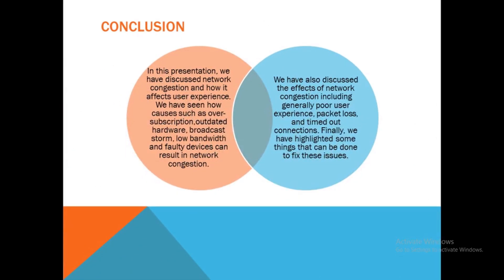So let's go over the takeaways. In this presentation, we have discussed network congestion and how it affects user experience. We have seen how causes such as oversubscription, outdated hardware, low bandwidth, and faulty devices can result in network congestion. We have also discussed the effects of network congestion including generally poor user experience, packet loss, and timed-out connections. Finally, we have highlighted some things that can be done to fix these issues.